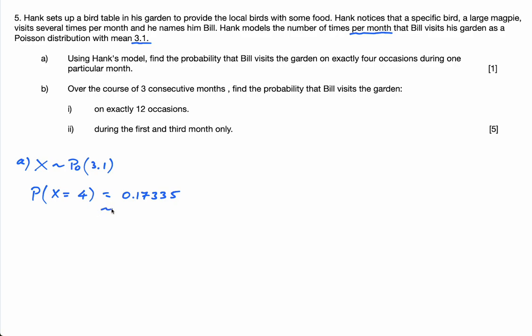0.17335. If you want, three significant figures: 0.173. Part B. Over the course of three consecutive months, find the probability that Bill visits the garden on exactly 12 occasions.